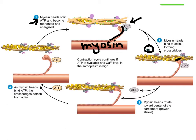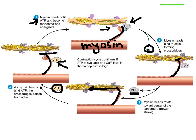Once a bond forms and the cross bridge latches on, a little more energy is needed — the ADP gets kicked out, having been burned up, and the myosin ratchets up and pulls on the actin, moving it in that direction. Then the original ATP molecule comes back and reattaches to the myosin, which disconnects the myosin from the actin and allows the muscle to relax. So the splitting of ATP kicks off the contraction, and the rebonding of ATP into its complete form stops the contraction.